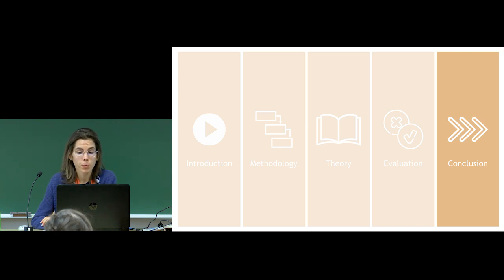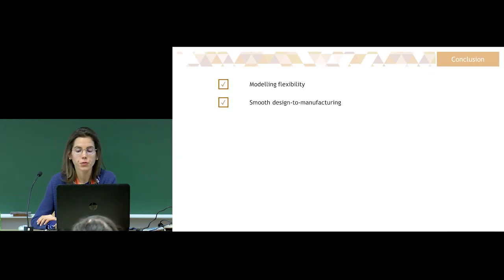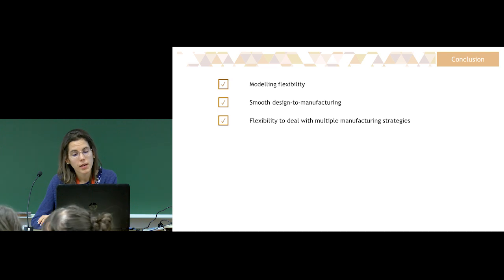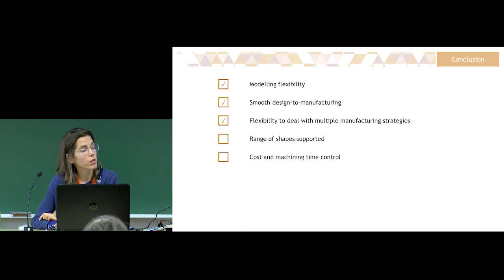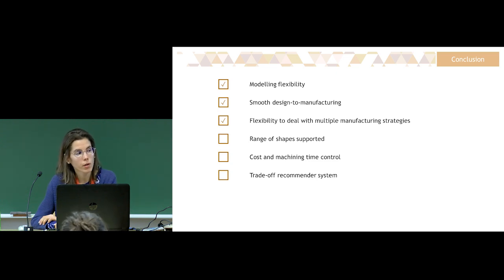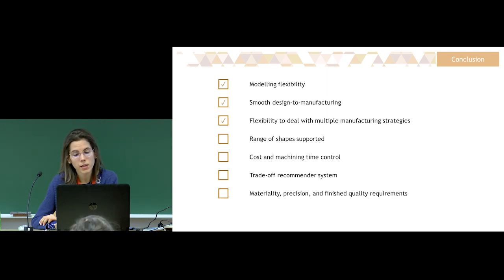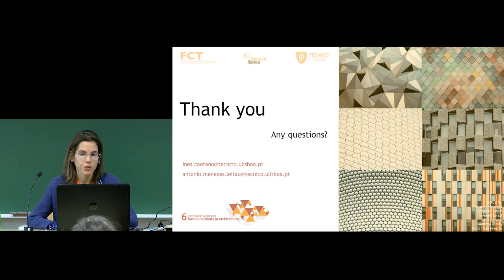Based on the results, we conclude the proposed formal approach has enough flexibility to coordinate the geometric exploration of facade design solutions of different volumetric compositions and their concretization using different manufacturing means and strategies. As a still ongoing investigation, we plan to extend it with more advanced features such as extending the range of shapes supported, adding cost and machining time control strategies, including a recommendation system comparing trade-offs resulting from different requirements in manufacturing scenarios, adding material precision and finished quality-related requirements, and automatically adjusting the sensitivity of different requirements according to each manufacturing technique. With this, I end this presentation. Thank you very much for your attention.